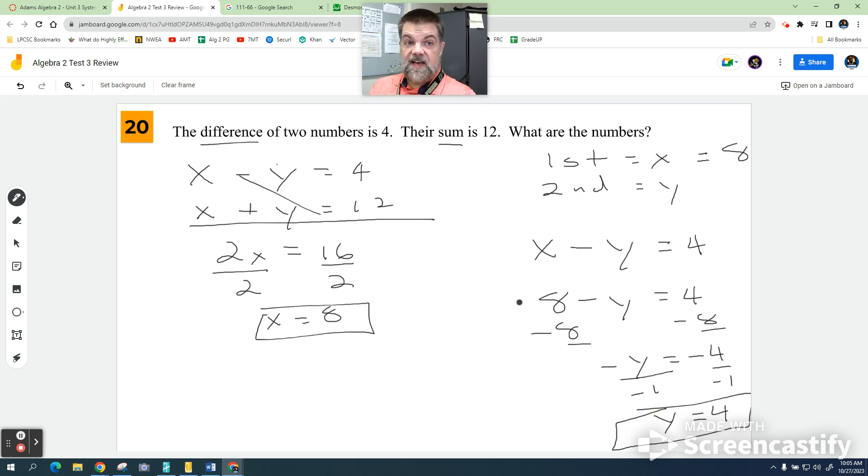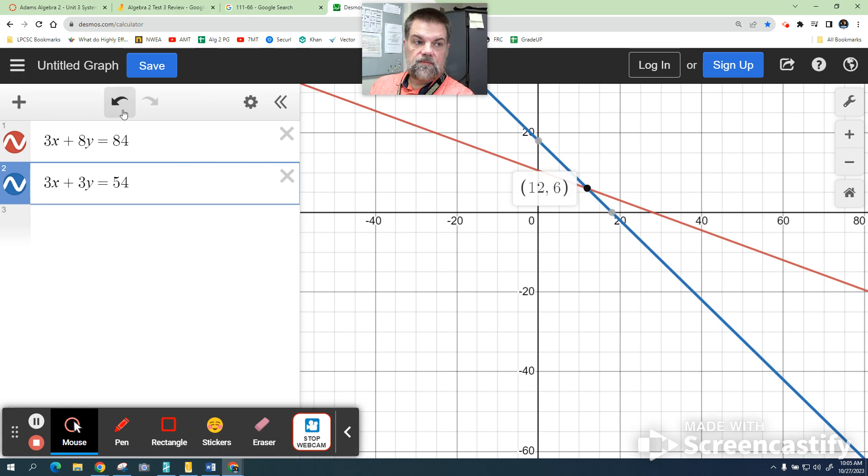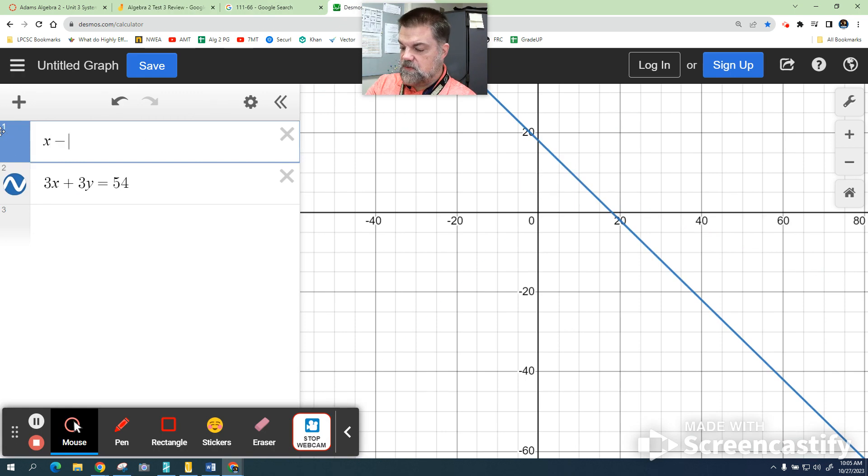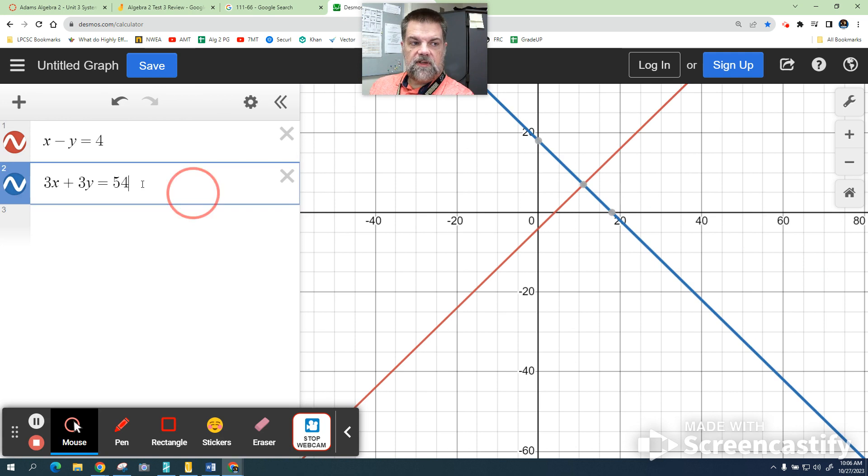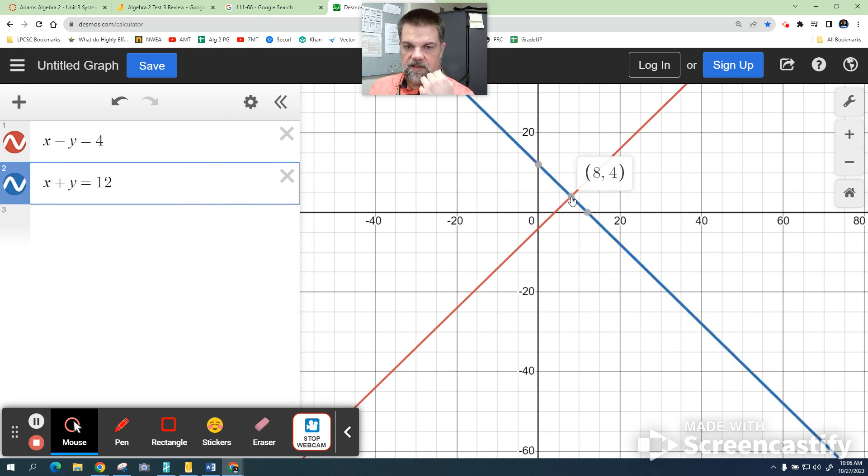How do I double check my math? Graph it. I'm going to say x minus y equals 4, I'm going to say x plus y equals 12. Guess where they crossed? 8 comma 4.